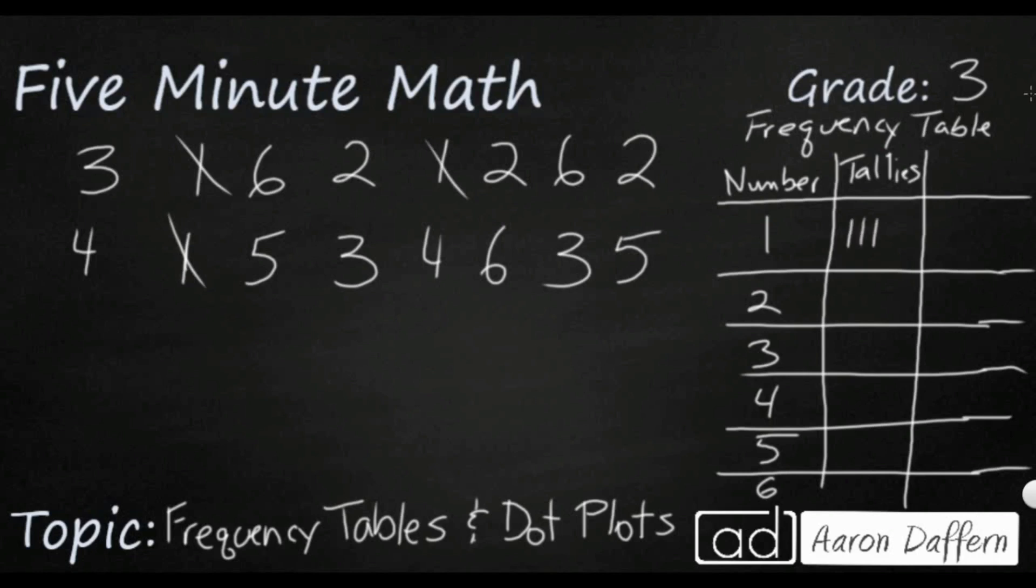Then with a two, I see one, two, three. So it looks like that's the same. With three is one, two, three as well. With four is one, two. And it looks like I only rolled two fives and three sixes.